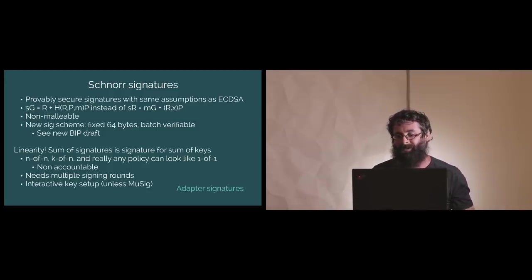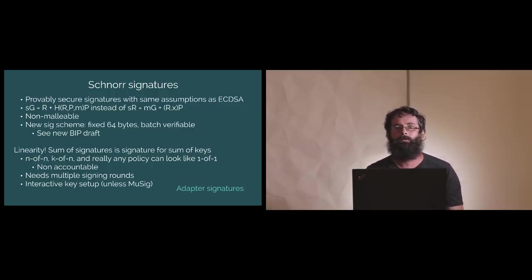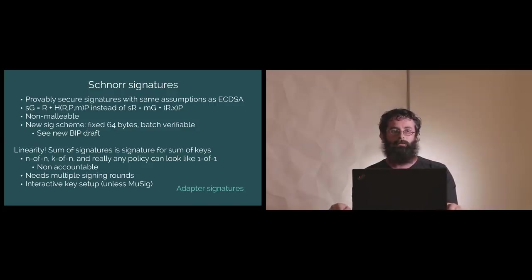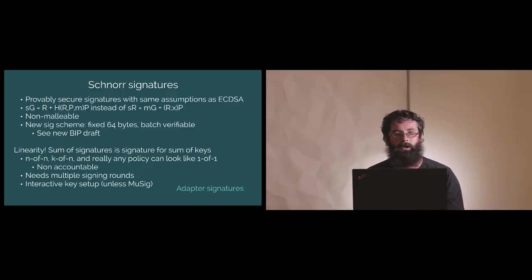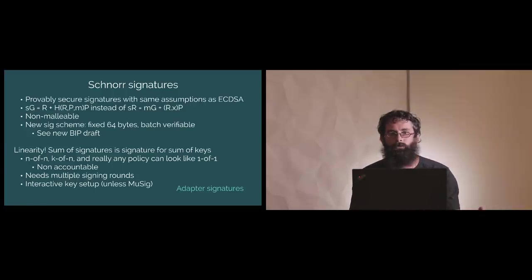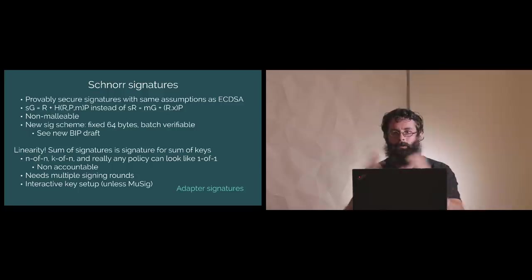Another downside is there is an interactive key setup for anything but a simple N-of-N, where the different signers need to first run a protocol among themselves before they can spend. For just N-of-N we came up with a construction called MuSig, co-authored by Andrew Polstra, Greg, Yannick Serret, and myself, which is a construction for doing this non-interactively — you just take keys, combine them, and can send to them.